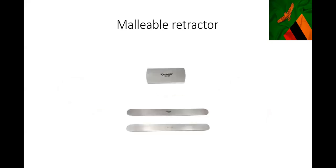This is a malleable retractor - a kind of retractor that is straight, looking like a ruler. So when you see it in your exam it will look like a ruler on the table. Some people call it a shoe. It's used when you are suturing the skin - you put it under the incision so that you don't injure organs below as you suture the skin and so on. That's a malleable retractor.